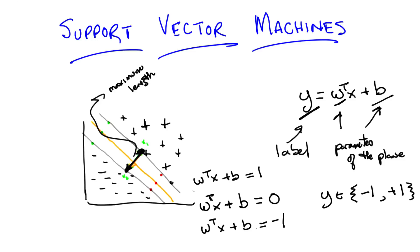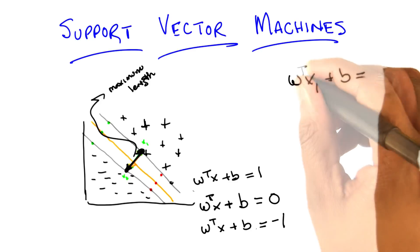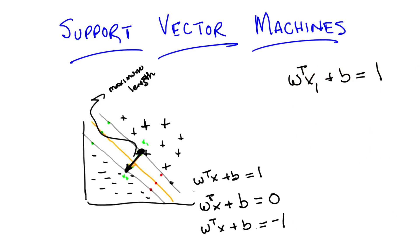So let's write that down as algebra. The equation for our positive line, so to speak, is therefore w transpose x1 plus b equals 1. And all I've done there is substitute some point, I don't have to know what it is, it's going to turn out, that gives me some point on that line. It gives me, puts me in some particular place on that line. And similarly, I can do the same thing for my negative line. And get w transpose x2 plus b equals minus 1.